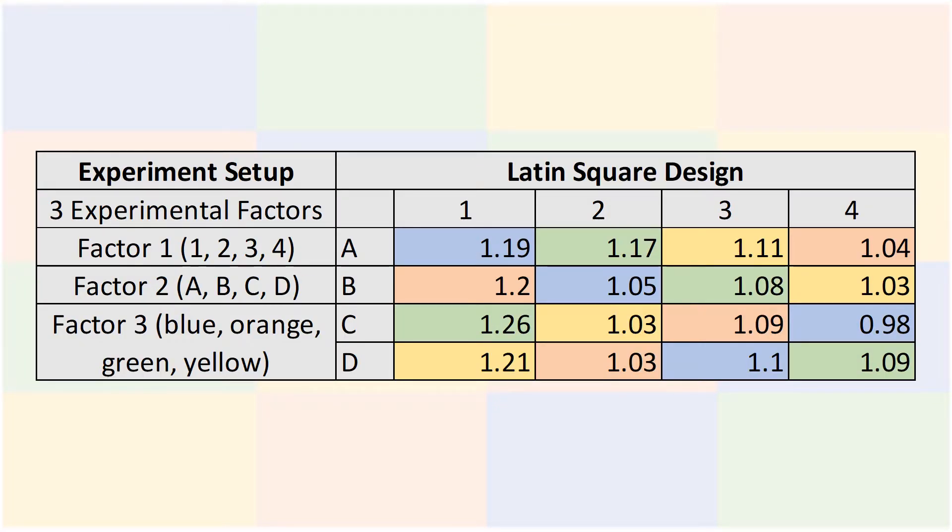This table shows one possible Latin square design that could result from this experiment. Factors 1 and 2 would represent the nuisance factors. So 1 through 4 might represent the different weather conditions the material is being exposed to, and A through D might represent different thicknesses of application of the coating being tested. The colors in the table would represent the treatment factor, which is the type of surface coating being tested. As you can see by the table, there is one treatment factor for each nuisance factor.